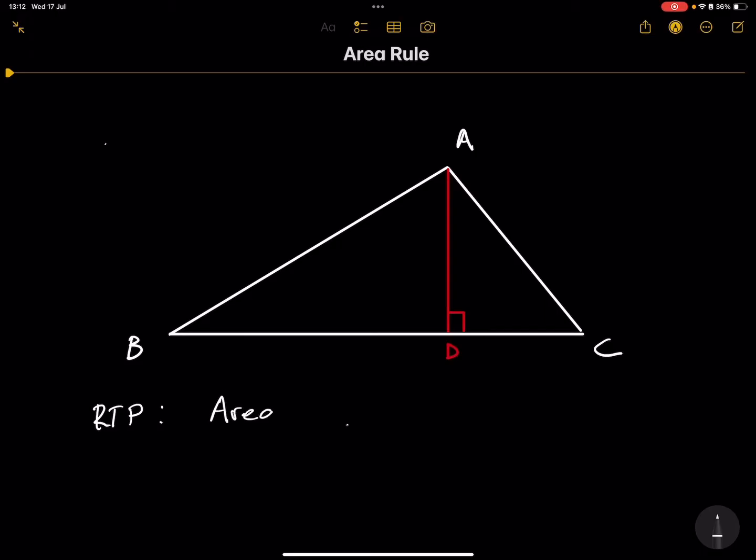So what are we required to prove? We're required to prove that the area of triangle ABC is equal to half of A multiplied by C times the sine of angle B. Now remember how the area rule works is that you always take the other two sides and the angle between those sides.